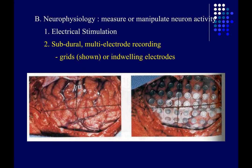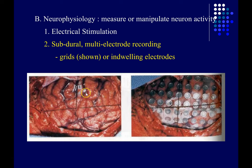But before you do that, you want to make very sure you know exactly which part of the brain is generating the seizures, and also that that part of the brain isn't doing something very specific that can't be replaced if it were removed. This is typically done with these indwelling electrodes: you bring in an epilepsy patient, have them stay in the hospital for a week or so with the electrodes implanted and just wait for a seizure. While they're waiting, they're often asked to volunteer for research — shown pictures or asked to perform some kind of task.